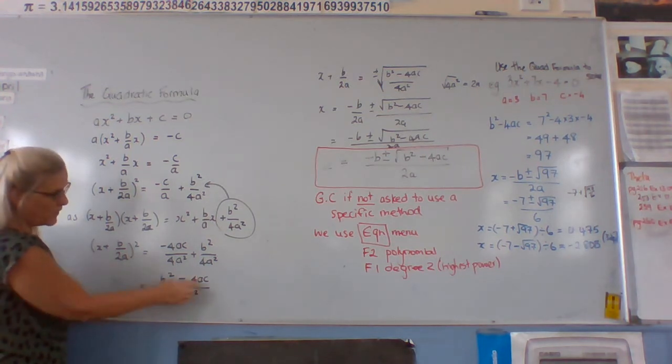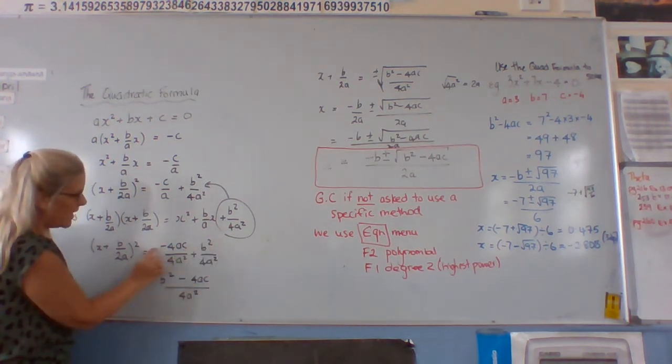So we can write that as just over 1. From here, I've rearranged this to make the minus in the middle, so b squared and a minus 4ac.